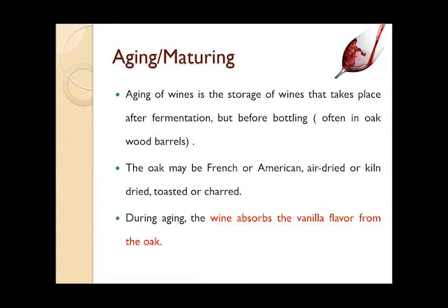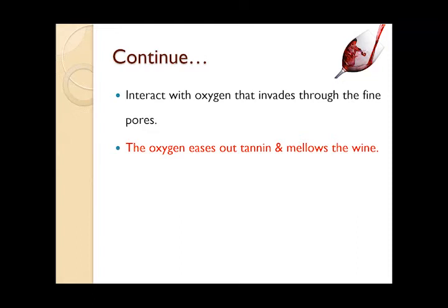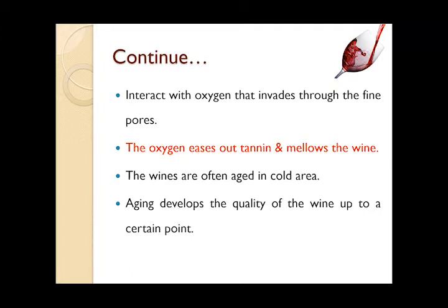During aging, the wine absorbs the vanilla flavour from the oak. The wine stored in the oak wood barrel interacts with oxygen, which eases out the tannins and mellows the wine. The wines are often aged in cold areas called a cellar. Aging develops the wine quality and also increases the flavours of the wine.